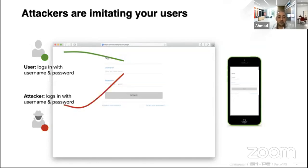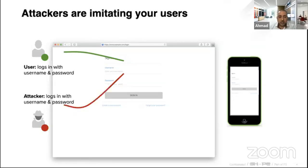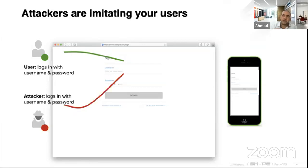Application abuse is one of the most difficult attacks we are seeing happen on applications, because there is no real distinction from an application's point of view between a legitimate user who is trying to log in with their username and password versus a criminal doing the very same thing with a stolen username and password. These are applications we all interact with on a daily basis — online banking, e-commerce, airline accounts, and many others. An application's native behavior is to accept anonymous requests, and this is how attackers abuse the inherent functionality.